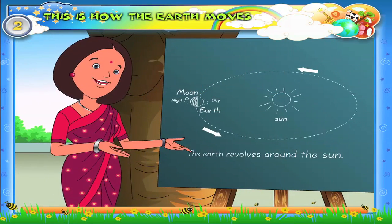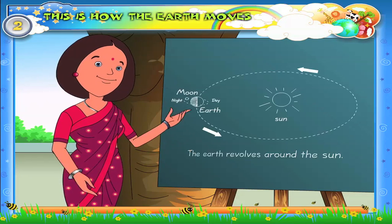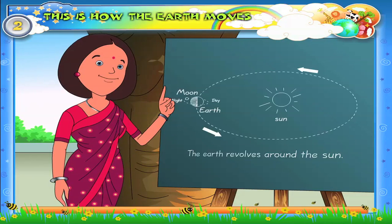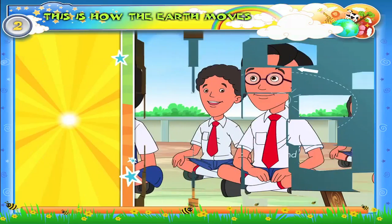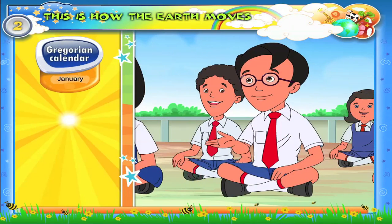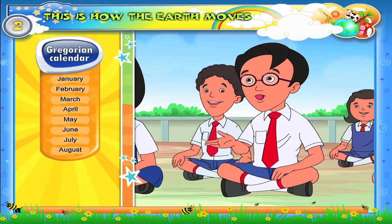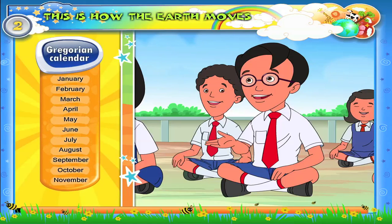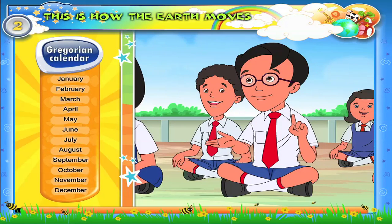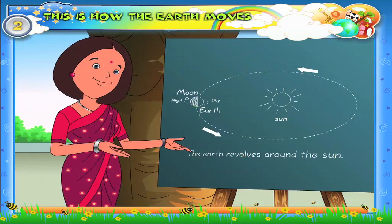There are 12 months in a year. Come on, Raj, name all the months of the Gregorian calendar. January, February, March, April, May, June, July, August, September, October, November and December. Very good!